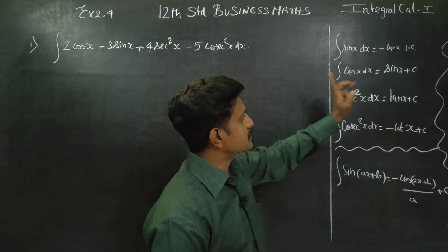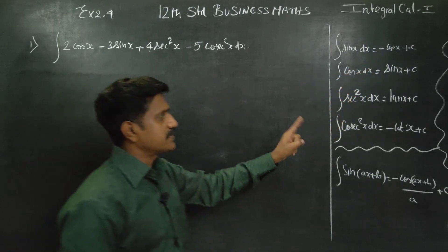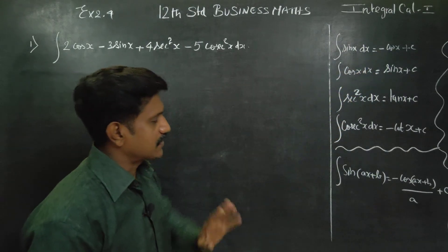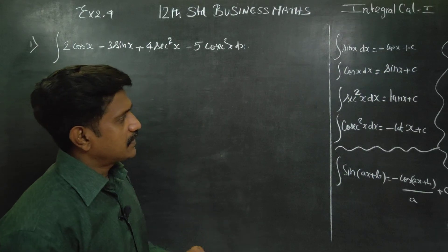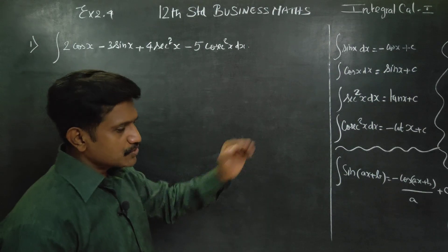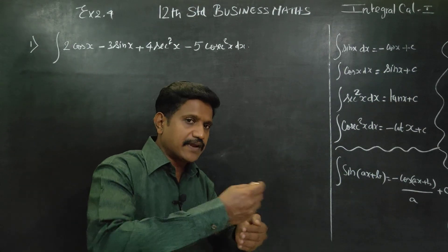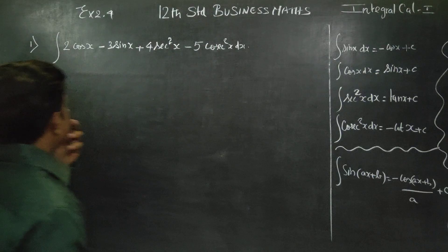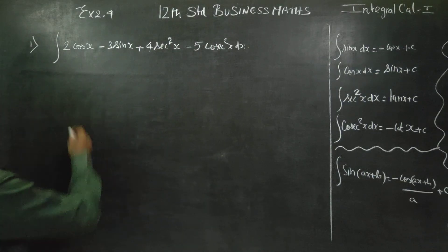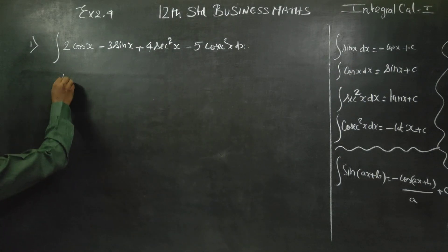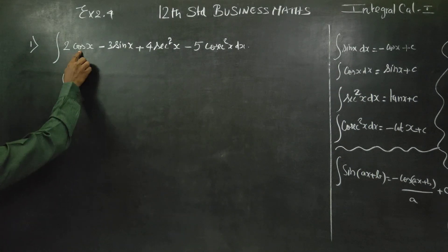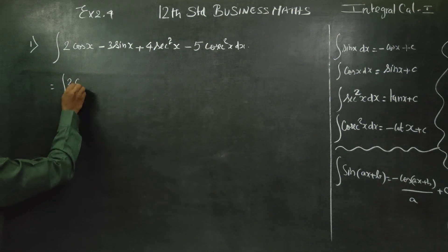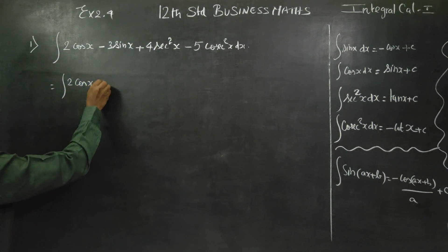Sin is done, cos is done. Minus cos x — it is a little bit. First, this sum of sin x is break. Integration — this sum is tan x, 2 cos x dx.